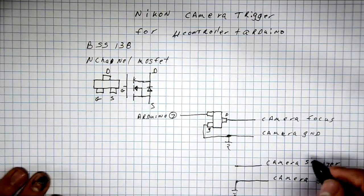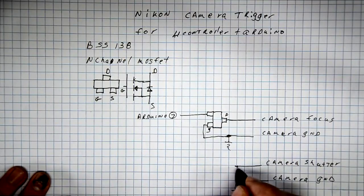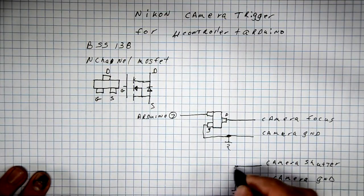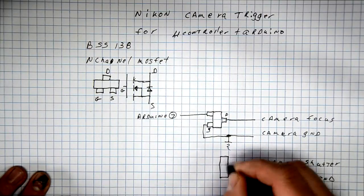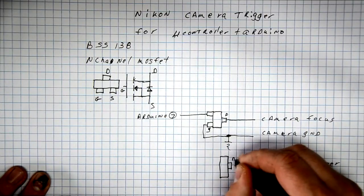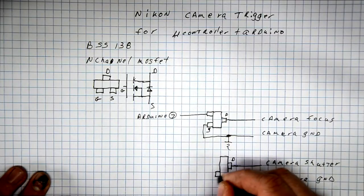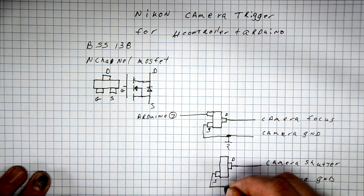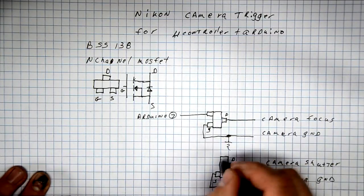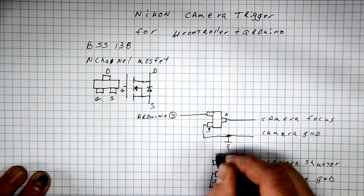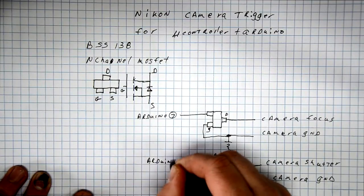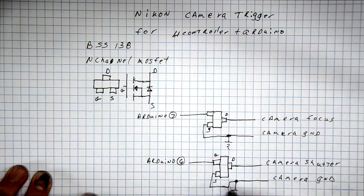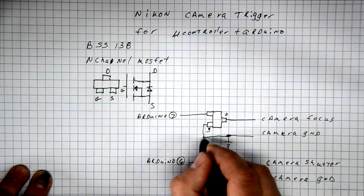The camera shutter happens to be the red wire from the wired remote, and camera ground is the same as the other one. Now the BSS 138 is a very tiny surface mount part, so it's very easy to wire, but you need to be very meticulous with your soldering.